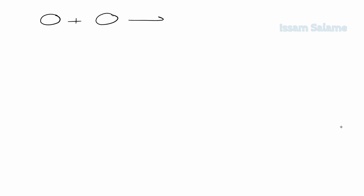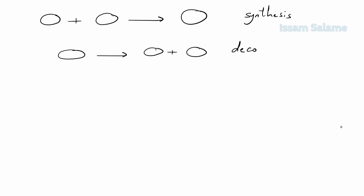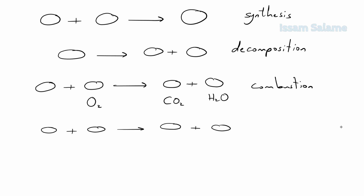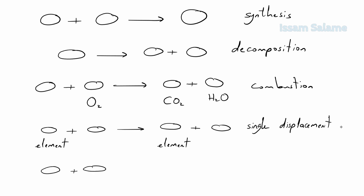Let me summarize the five types of reactions: when we have one product, it's a synthesis reaction; when we have one reactant, it's a decomposition reaction; when the reactants include oxygen and the products are carbon dioxide and water, it's a combustion reaction; if on the reactant side we have an element and on the product side we have another element, it's a single displacement reaction; and finally, if we have a reaction where ions are swapped, it's called a double displacement reaction.